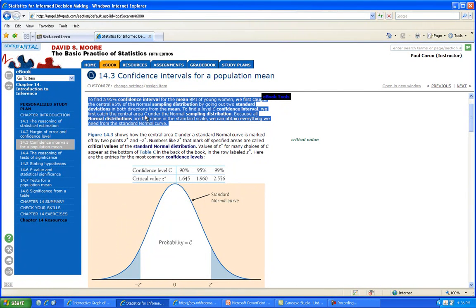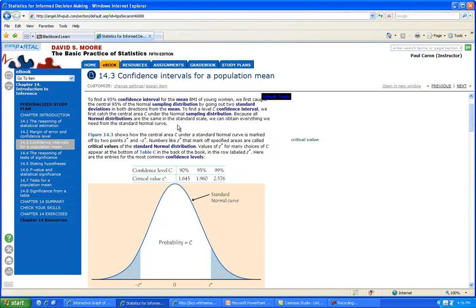We find the central area C of the normal sample distribution. Because all normal distributions are the same, we can obtain everything we need from the standard normal curve. This figure shows how the central area C under a standard normal curve is marked off by two points called critical points: z-star (or z-asterisk) and negative z-star. These mark off specific areas called critical values. You set them off before you start. Anything that falls outside doesn't fit.